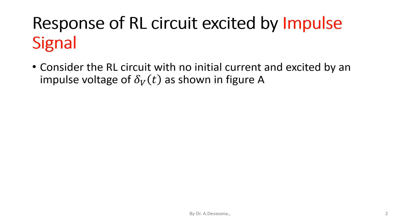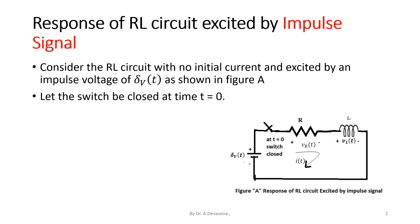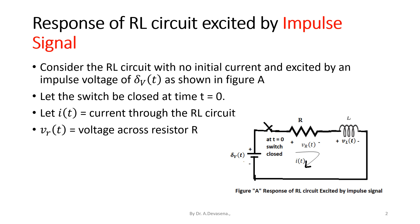Consider the RL circuit with no initial current and excited by an impulse voltage delta suffix V of t as shown in figure A. This is the representation of the RL circuit excited by an impulse signal. Let the switch be closed at time t is equal to 0. Let the current I of t be flowing through the RL circuit, where voltage drop across the resistor is V suffix R of t and voltage drop across the inductor is V suffix L of t.